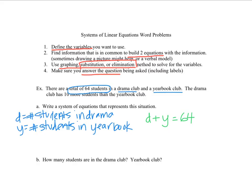The drama club has 10 more members than the yearbook club. So since the drama club is larger, then we would say yearbook plus 10 is equal to the drama. Because if we add 10 members to the yearbook club, it would equal the amount of students in the drama club. So I've just done part A. I've written a system of equations.